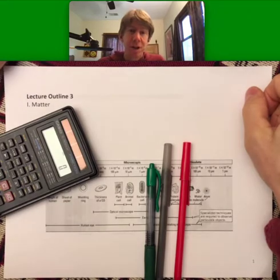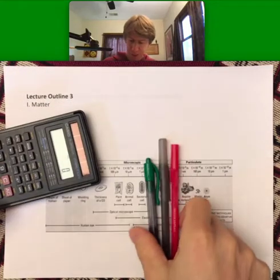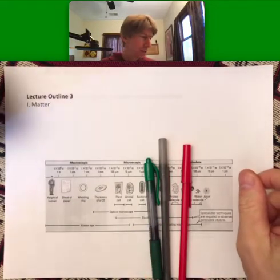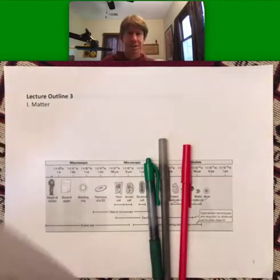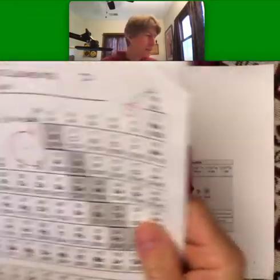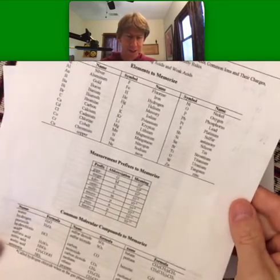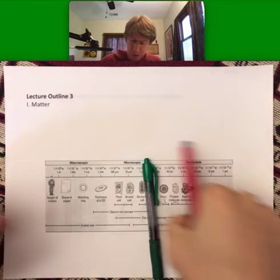Well, let's get started with Lecture Outline 3. I've got my calculator, I've got three different colored pens. We won't need our calculator until a little later, but it's right here. As always, I've got my periodic table and my conversions and equation sheets, and not too far away is my nomenclature sheet too. So let's go ahead and get started.